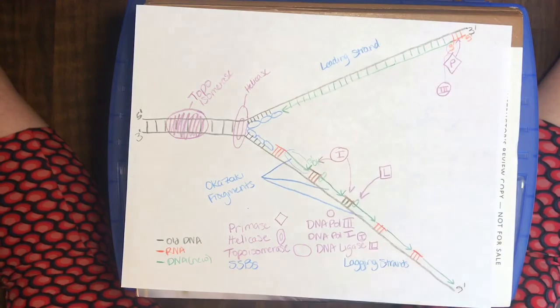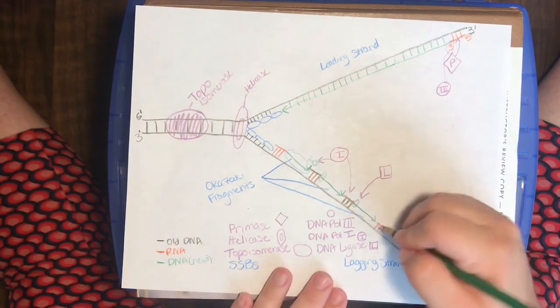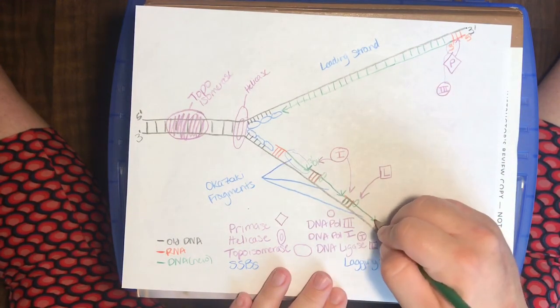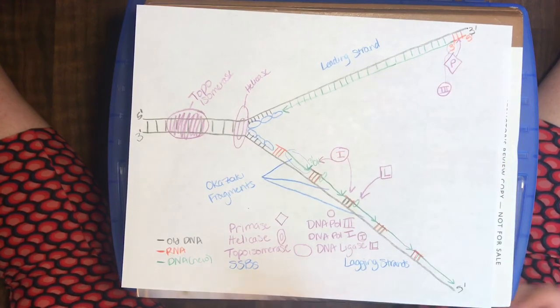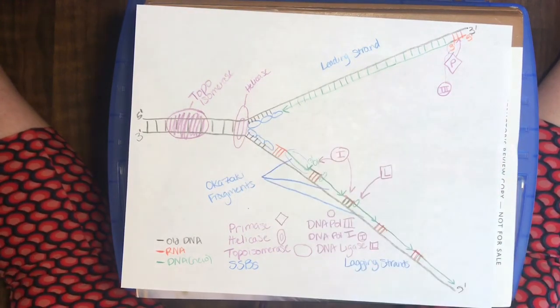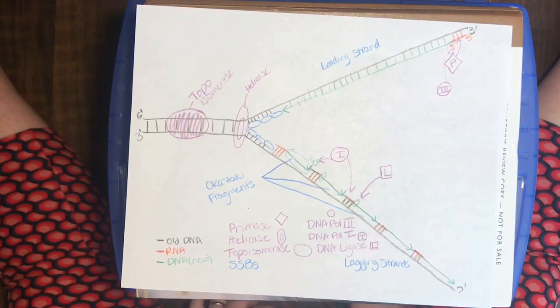So, eventually, we do come to a place where we have a contiguous DNA molecule all the way throughout with no RNA there whatsoever.